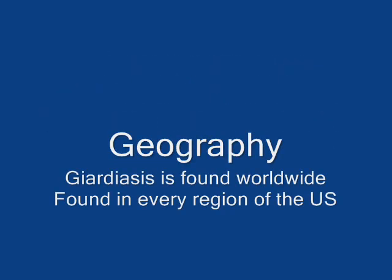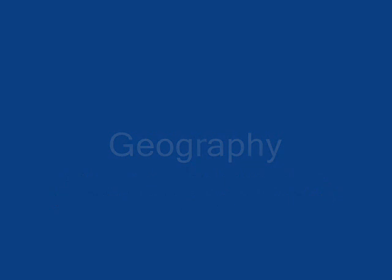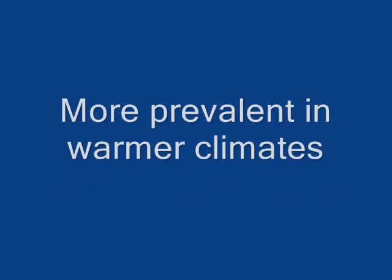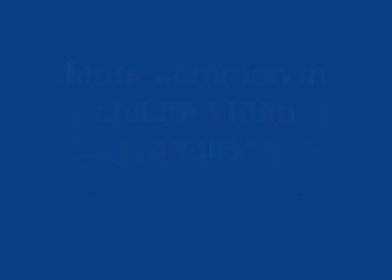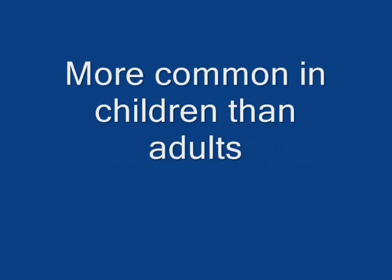Geography. Giardiasis is found worldwide. It's found in every region of the United States. It's more prevalent in warmer climates than in cool climates, and it's more common in children than it is in adults.